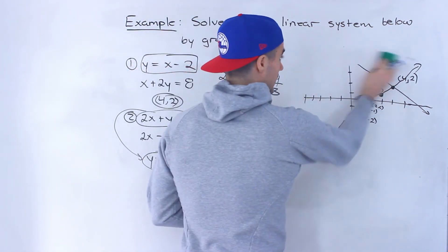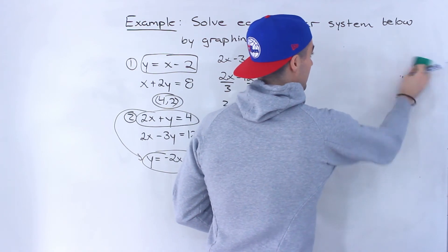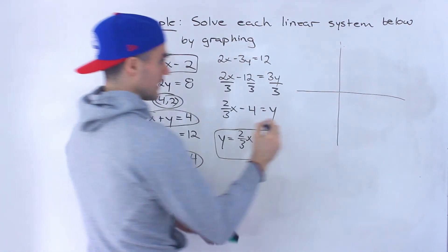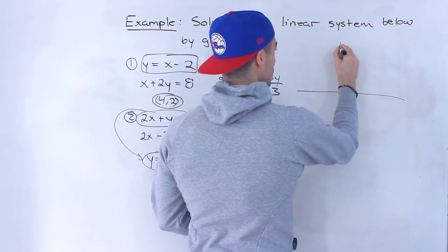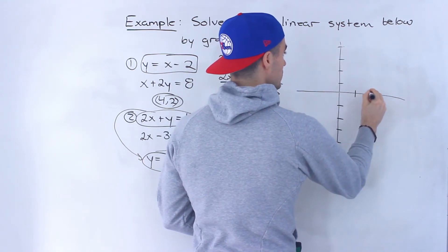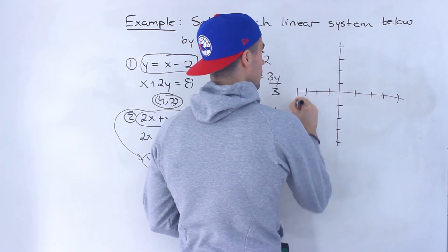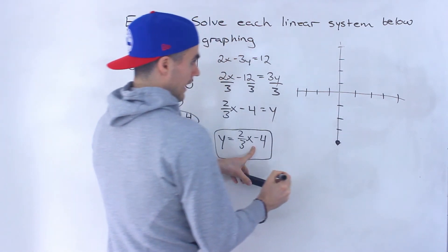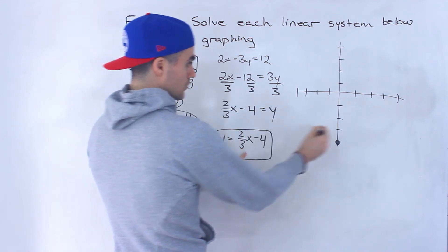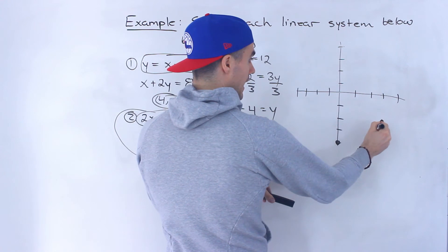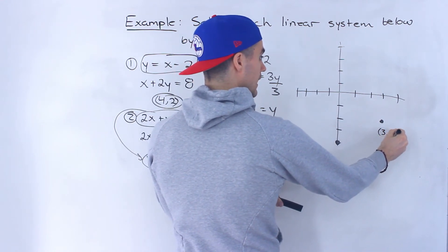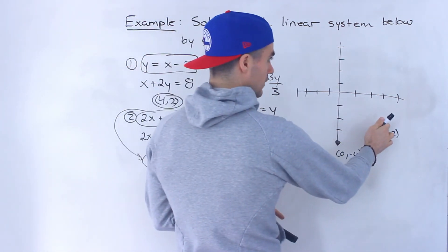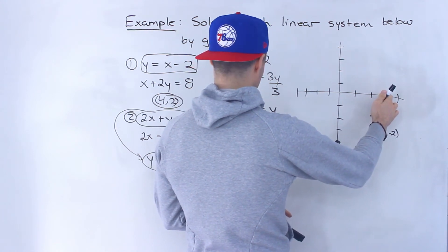Now that they're both in that format, we can graph both of them. Notice we're going positive four to negative four on the axes. Starting with y equals two-thirds x minus four — the y-intercept is at zero and negative four. The slope two-thirds means we rise two and run three. So that point would be at three and negative two. And then rise two and run three again — that would bring us to six and zero.